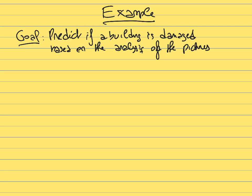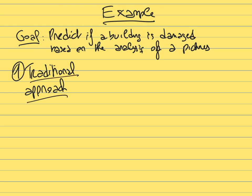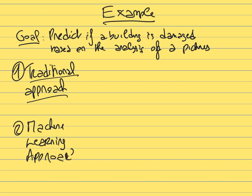You want to write a program that takes a picture as input and predicts whether the building in that picture has been damaged during the natural disaster. There are two ways to approach this: the traditional approach and the machine learning approach.